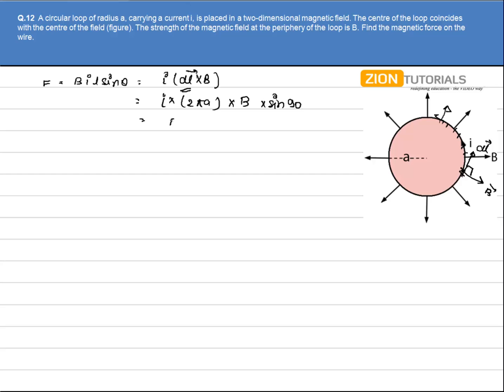So the answer will be B I into 2 pi A and the direction of force can be easily calculated by stretching your finger in the DL vector and curling them in the direction of magnetic field. So the force that is acting on the wire frame is inward. That is inside the plane.